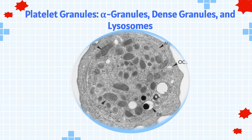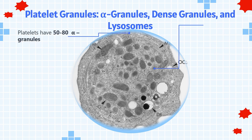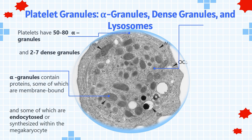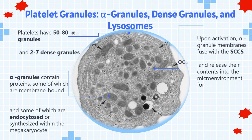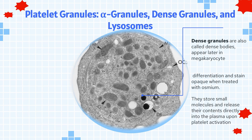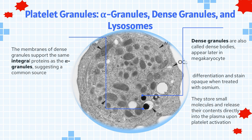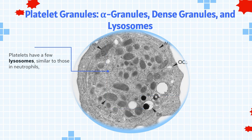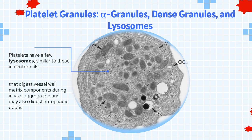Platelets have 50 to 80 alpha granules and 2 to 7 dense granules. Alpha granules contain proteins, some of which are membrane-bound and some of which are endocytosed or synthesized within the megakaryocyte. Upon activation, alpha granule membranes fuse with the surface-connected canalicular system and release their contents into the microenvironment for platelet adhesion, aggregation, and plasma coagulation. Dense granules, also called dense bodies, appear later in megakaryocyte differentiation and stain opaque when treated with osmium; they store small molecules and release their contents directly into the plasma upon platelet activation. The membranes of dense granules support the same integral proteins as the alpha granules, suggesting a common source. Platelets also have a few lysosomes, similar to those in neutrophils, that digest vessel wall matrix components during in vivo aggregation and may also digest autophagic debris.